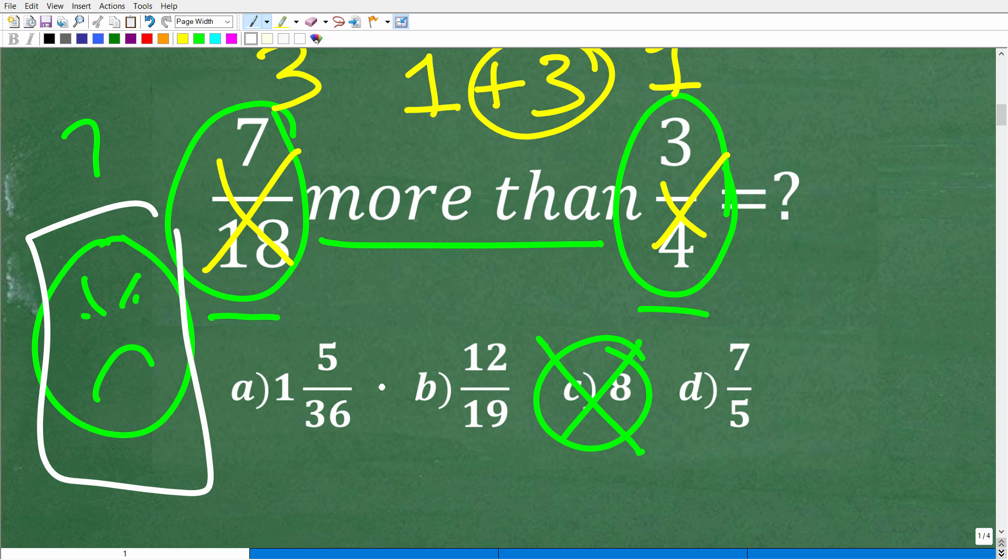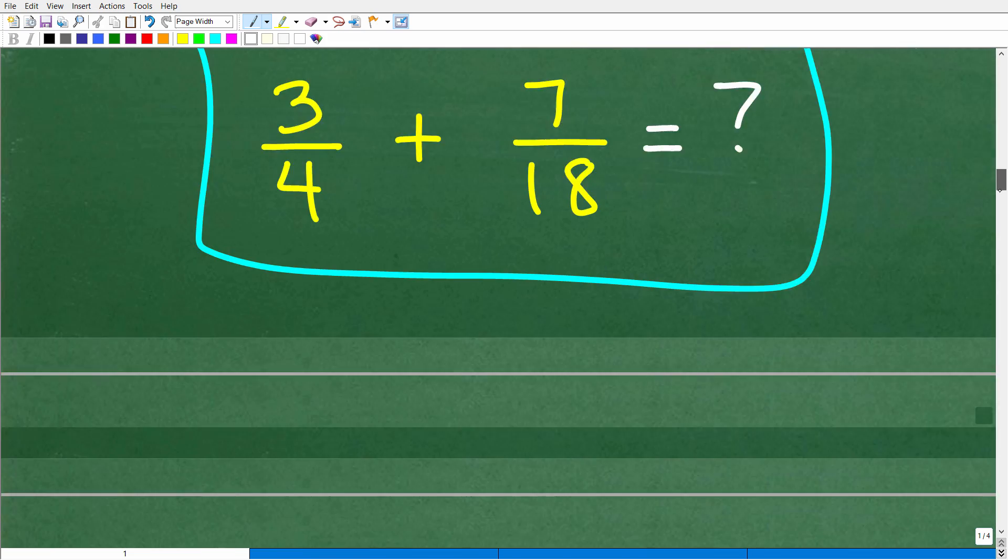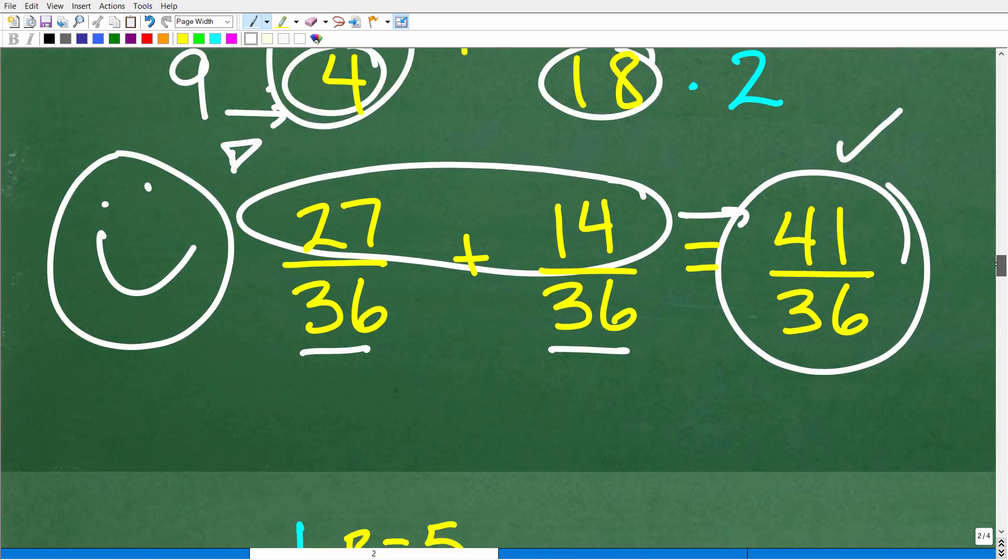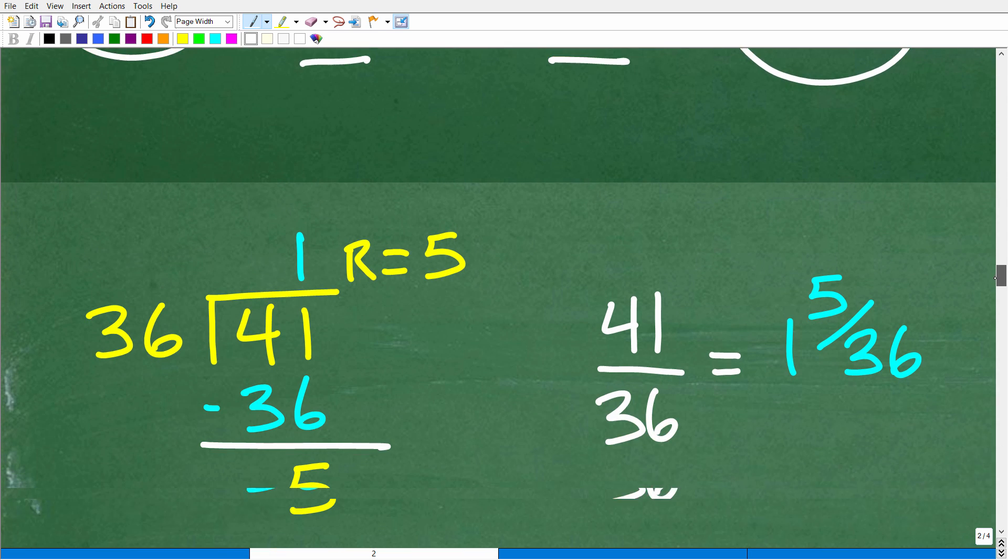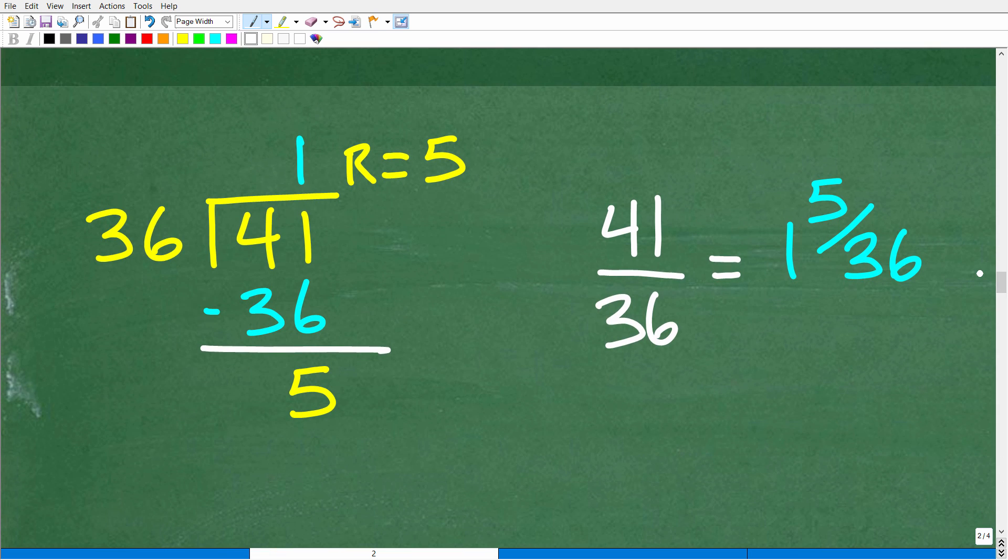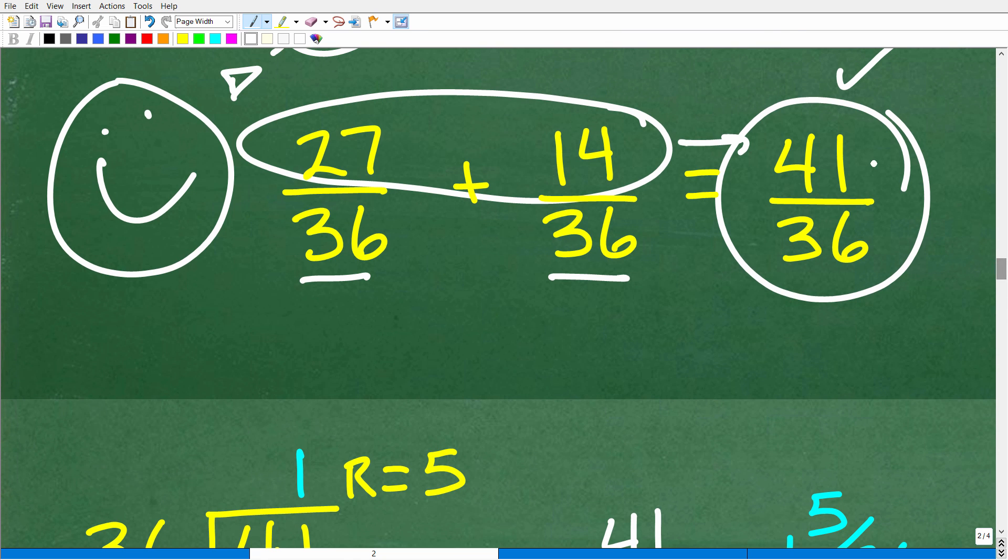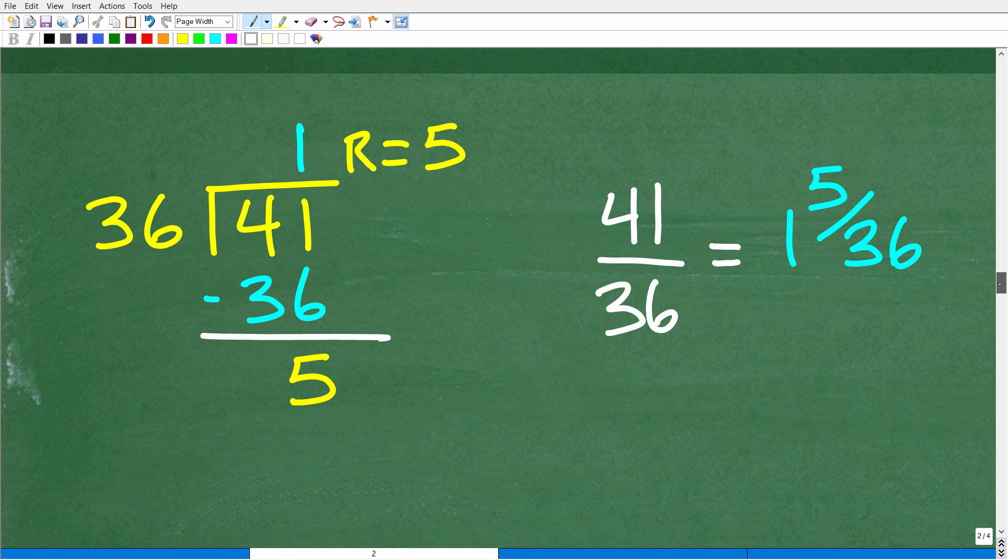But here is a problem. This 41 over 36 was not a choice. Let's go back over here to the question on our exam. And this can happen. You're like, alright, I'm looking for my answer here. I don't see it. What's going on? Did I do this wrong? No, no, no. What you have to do is look at the answer and be like, well, maybe this is the correct answer. It's just in a different form. And that happens all the time in math.